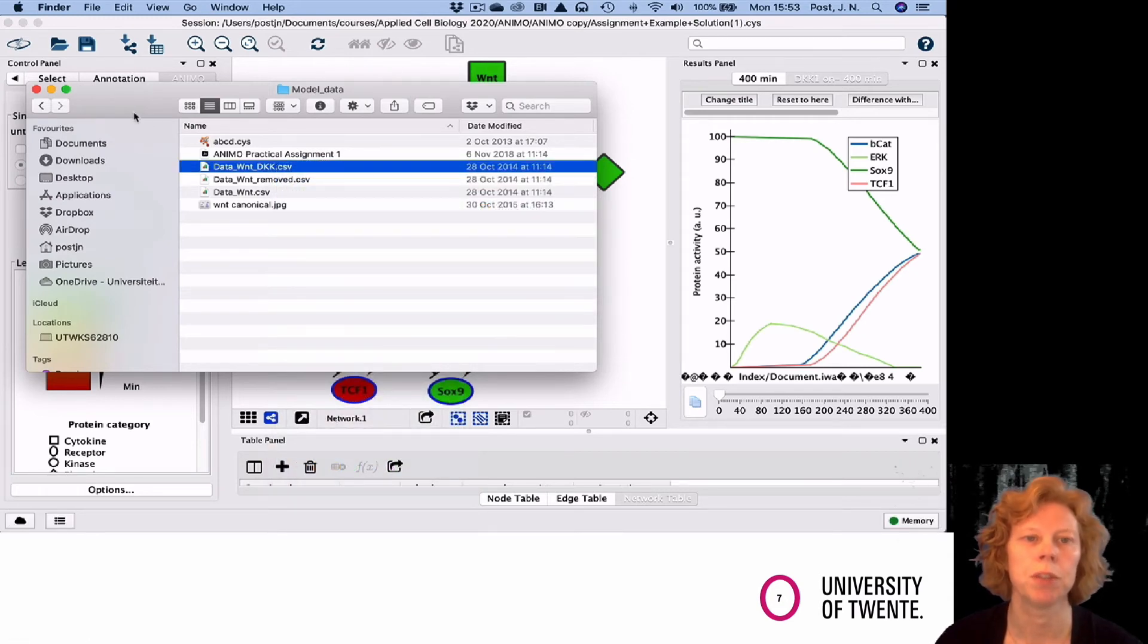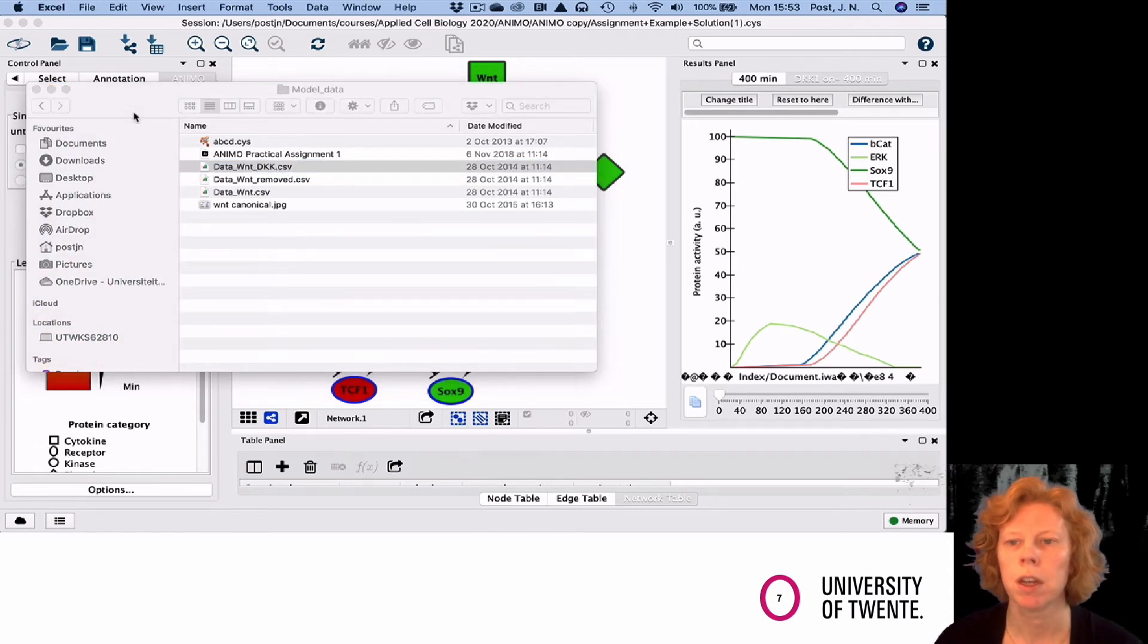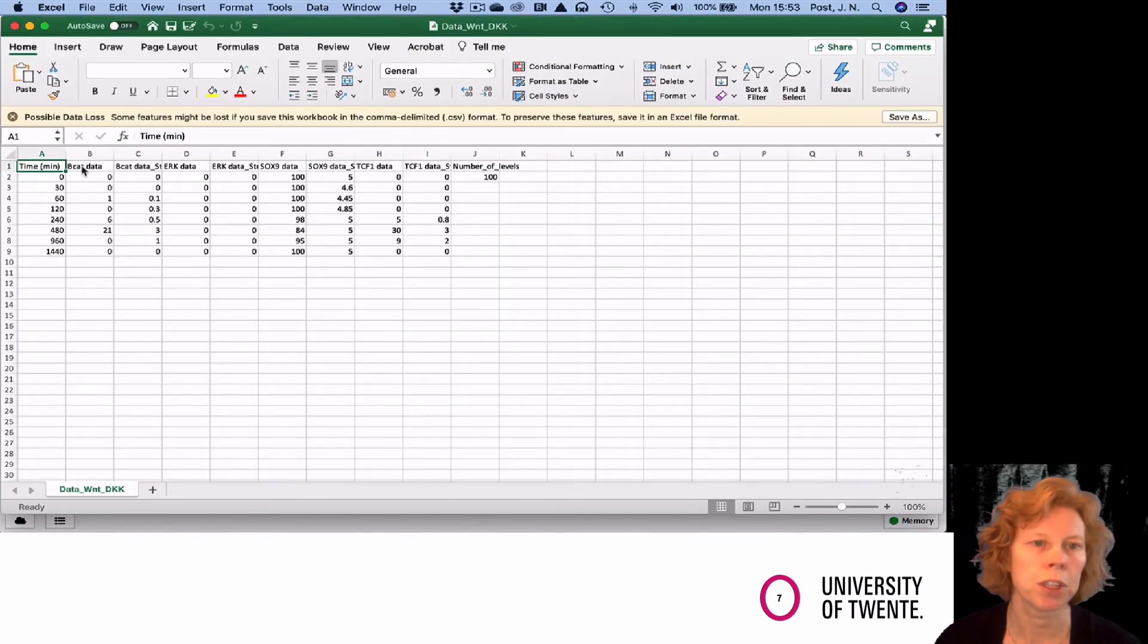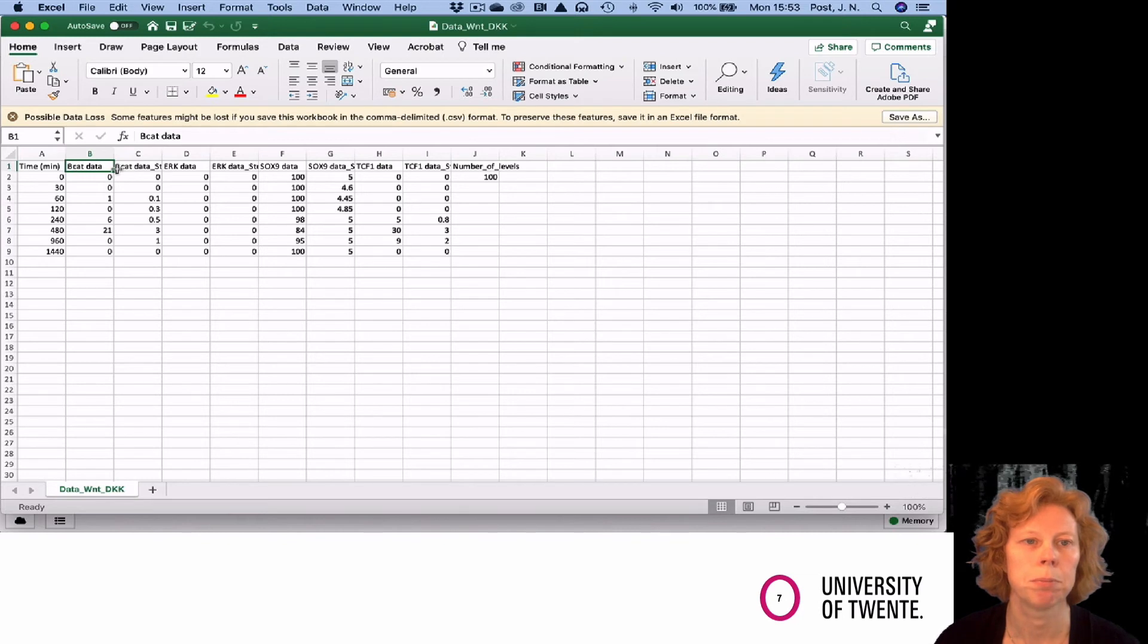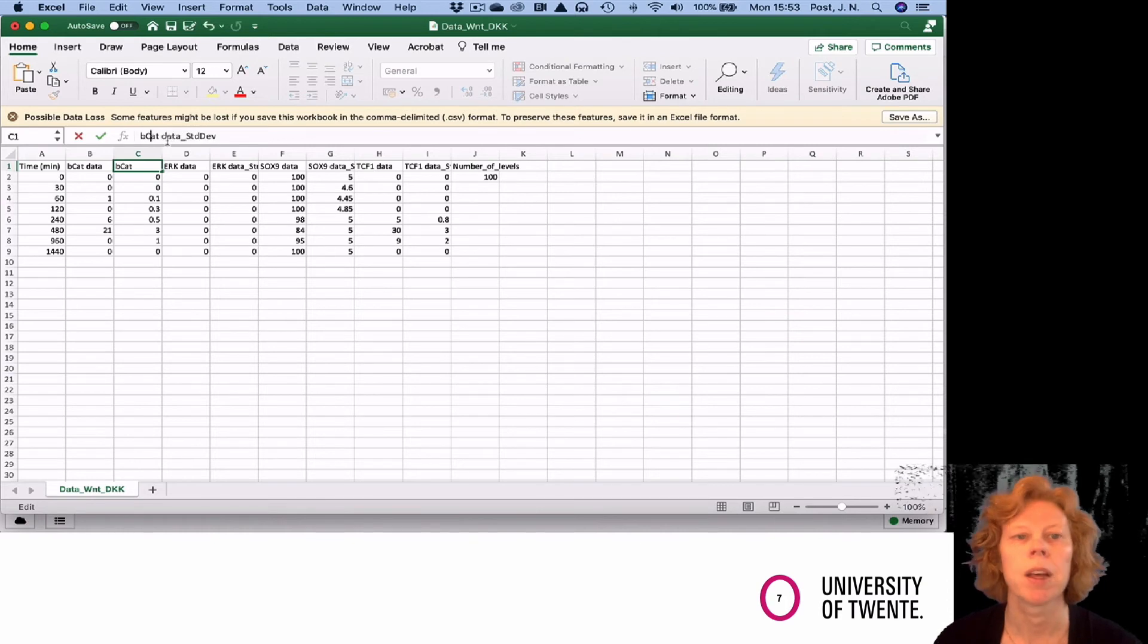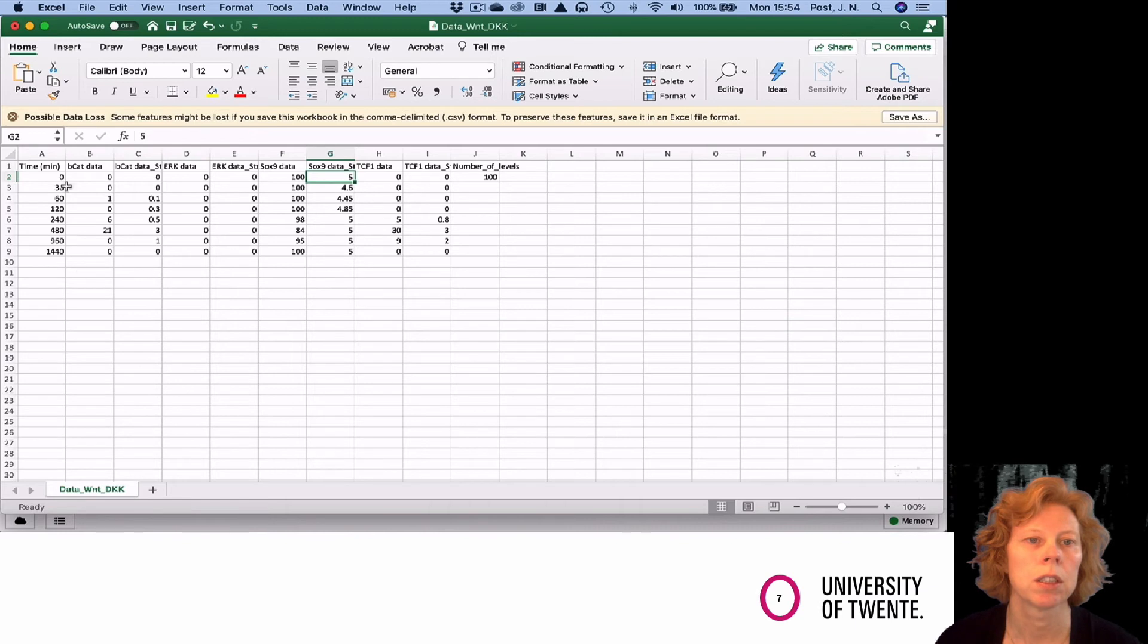I want to first check my CSV file. I'm going to open my file in Excel and make sure that the CSV file contains the exact same names as the names of the nodes in the network. I notice here that BetaCat has the capitals different from how I put it in my network. I have to change that because it is capital sensitive. Also I have to make sure that the time in the first column is in minutes. So I changed BetaCat and SOX. ERC and TCF1 were correct.